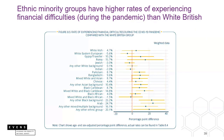Ethnic minorities also have higher rates of experiencing financial difficulties during the pandemic than the white British. The same style of chart shows the white British reference line, with dots to the right indicating higher rates of financial difficulty. This is the case for many ethnic groups, particularly Arab, some mixed groups such as white and black Caribbean, and the Pakistani group. These are age-adjusted rates.